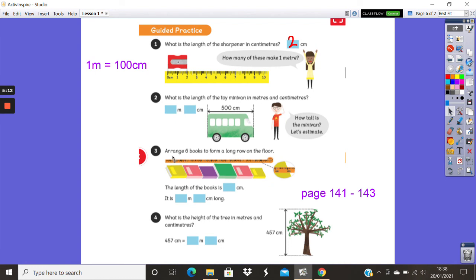And then you've got to arrange six books to form a long row on the floor. The length of the books is, and then you need to convert into meters in centimeters. What is the height of the tree in meters and in centimeters? So 450 centimeters equals blank, blank.